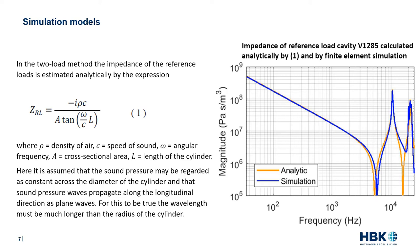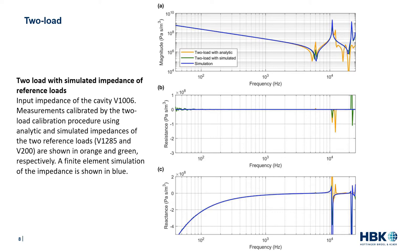We have therefore replaced the analytical expression with finite element simulation models of all reference load cavities. To illustrate the effect, we calibrate a measurement of cavity 1006 cubic millimeters using both analytical and simulated impedances of the two reference loads — 1285 and 200 cubic millimeters. The blue trace is the reference result from simulation. Using the analytical expression produces a relatively large error in magnitude around the first minima and above the first maxima. The two-load method with simulated impedances still generates a small error at the minima and a negative resistance around the maxima.